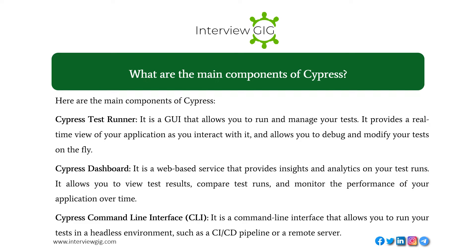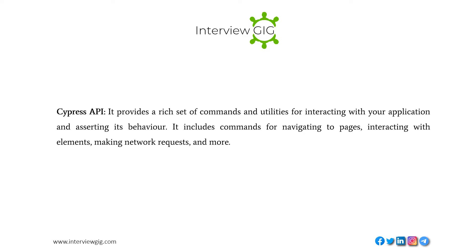What are the main components of Cypress? Here are the main components: the Cypress Test Runner, a GUI that allows you to run and manage tests with a real-time view of your application; the Cypress Dashboard, a web-based service providing insights and analytics on test runs; the Cypress Command Line Interface, for running tests in headless environments such as CI/CD pipelines; and the Cypress API, which provides a rich set of commands for navigating pages, interacting with elements, making network requests, and more.